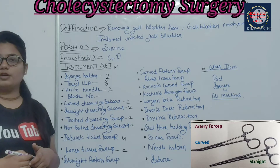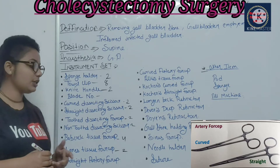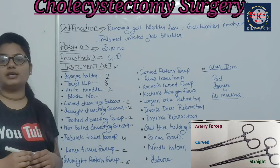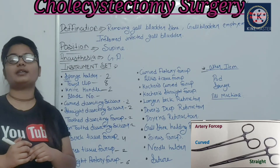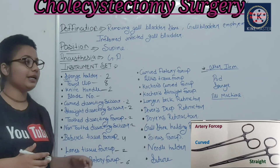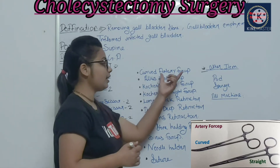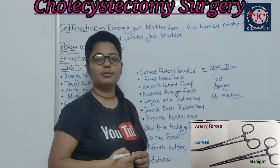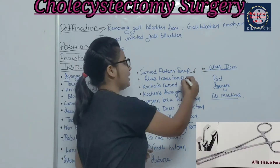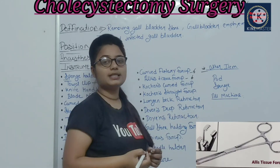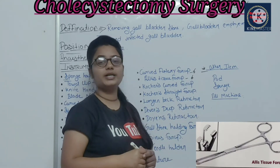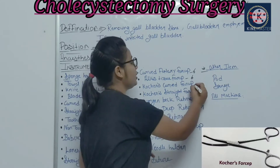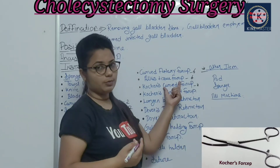Next are artery forceps. You need quite a few artery forceps — keep 6. Artery forceps are used for bleeders, tissues, or sutures. Curved artery forceps should be kept in medium and big sizes. Lanish tissue forceps are also general instruments used in all surgeries.